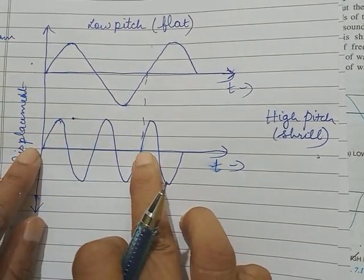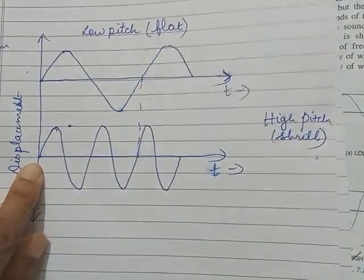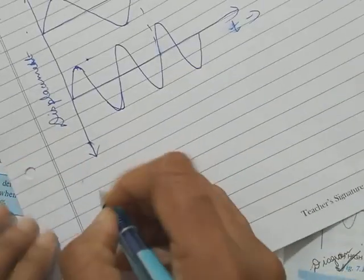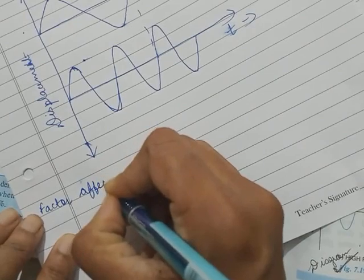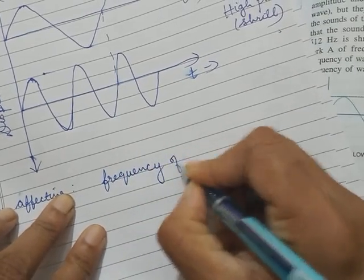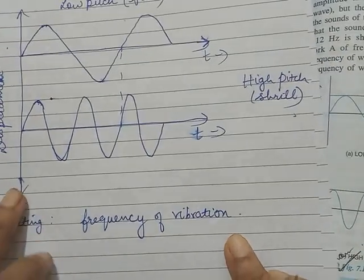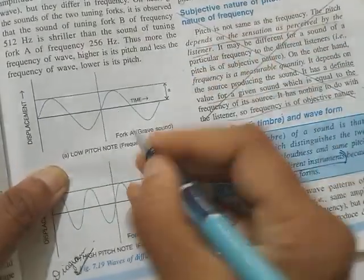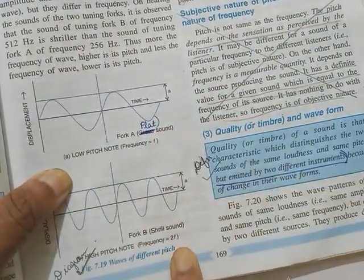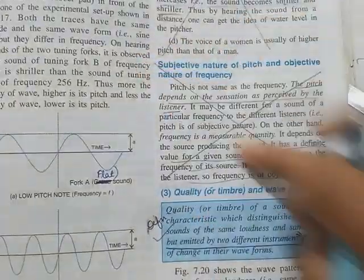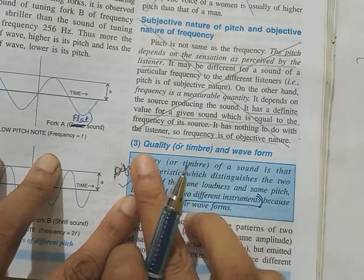In this particular time, high pitch produces more waves - that's high frequency. Low pitch produces fewer waves - that's low frequency. Make sure you keep the amplitude the same. Factor affecting pitch: frequency of vibration determines the pitch of a sound. Higher frequency means high pitch or shrill sound; low frequency produces a low pitch or flat sound. Examples and subjective/objective nature you can cut off.